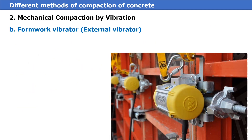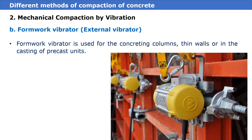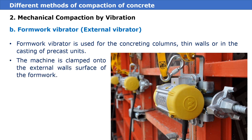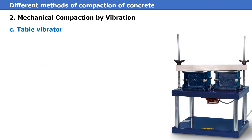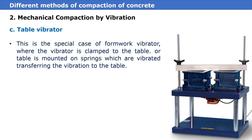Second is the formwork vibrator, also known as the external vibrator. Formwork vibrators are used for concrete in columns, thin walls, or in the case of precast units. The machine is clamped on the external wall surface of the formwork.